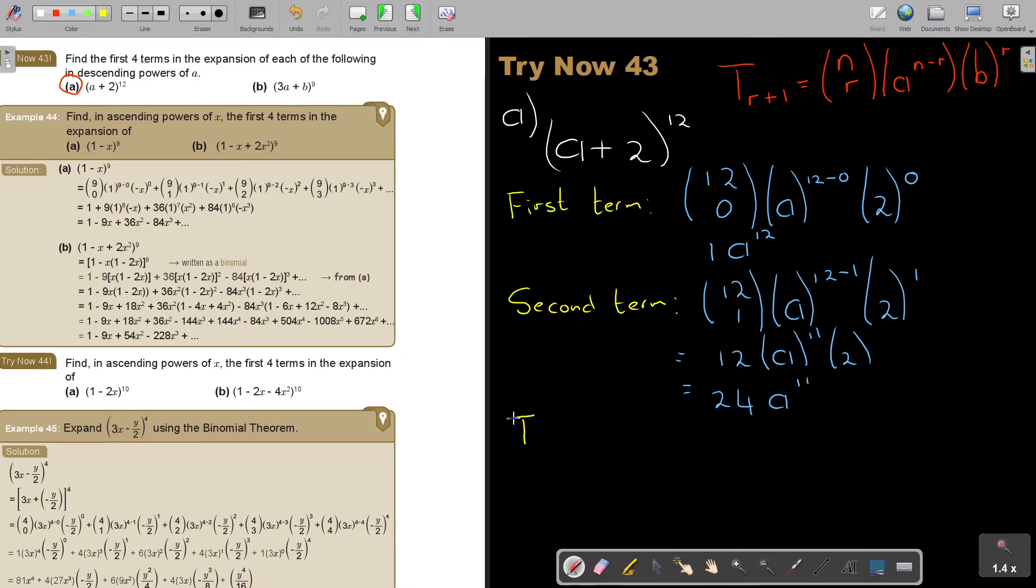And then your third term, so this is going to be (12,2), and it's A, and it's 12 minus 2, and it's 2 to the power of 2. So press on your calculator 12 N choose R 2, and that's 66. And it's 2 squared, and it's A to the power of 10, and it's 4. And I times by 4, 264. And it's A to the power of 10.